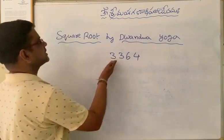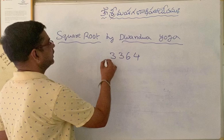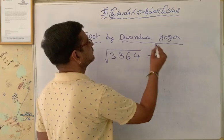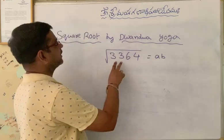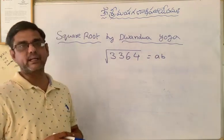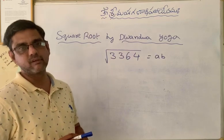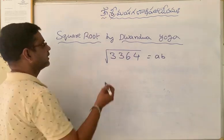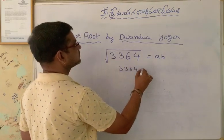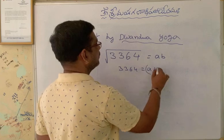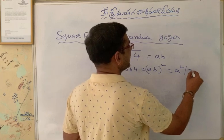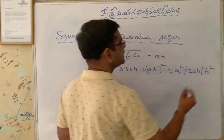Let us consider an example: 3364. We want to find out the square root of 3364. Let it be AB. As we know, the square root of a 4-digit number is a 2-digit number, let it be AB. That means we need to find out the value of A as well as the value of B. If the square root of 3364 is AB, then 3364 equals AB whole square, which I will write as A square slash 2AB slash B square.